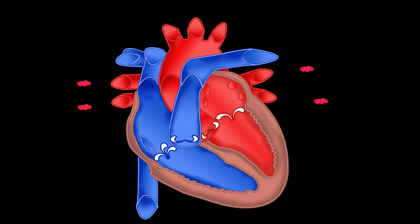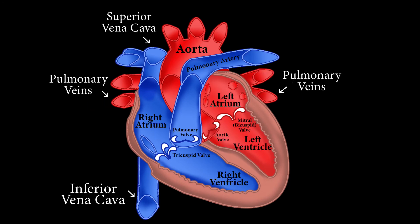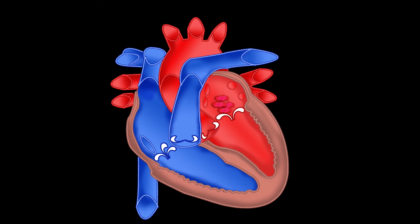The left side of the heart operates at the same time as the right side. The pulmonary vein empties oxygen-rich blood from the lungs into the left atrium of the heart. As a side note, I was really confused in nursing school because veins are supposed to be blue and arteries are supposed to be red, but if you know where the blood is coming from and where it's going, you'll know which part of the heart has oxygen-poor versus oxygen-rich blood.